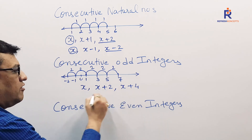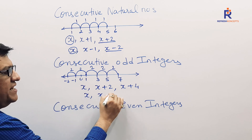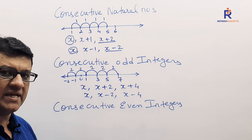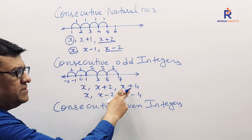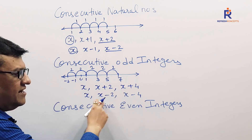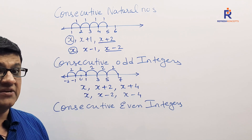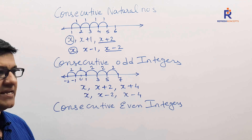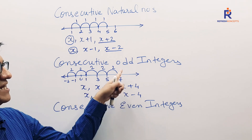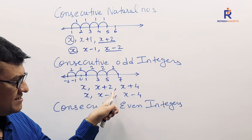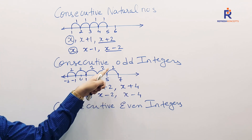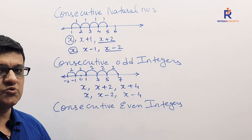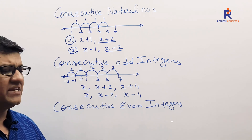You can also take X, X minus 2, X minus 4. As discussed previously: X is the smaller number and X plus 4 is the larger, or X is the larger and X minus 4 is the smaller. Many students initially wondered how 2 and 4 can appear in an odd integer — the answer is because of the difference between two consecutive odd integers. I hope that confusion is now cleared.